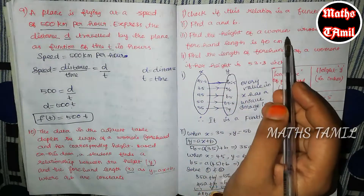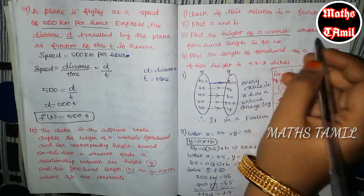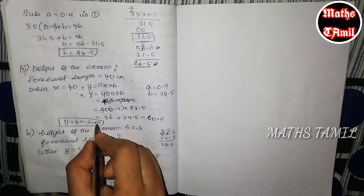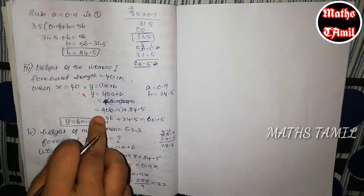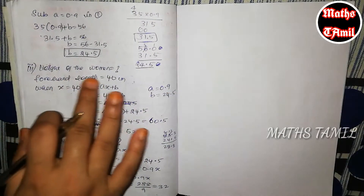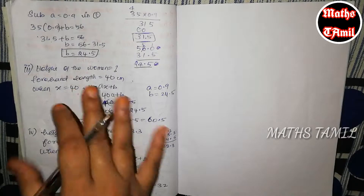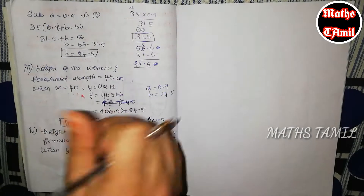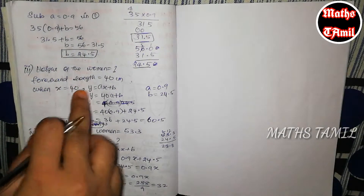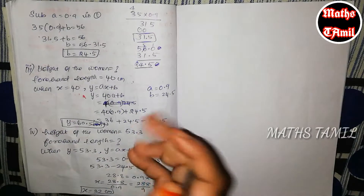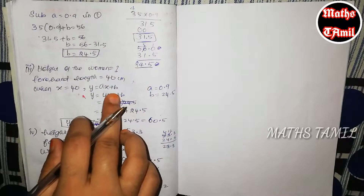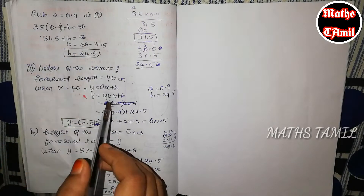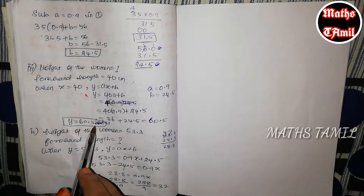Next, we find the height of the woman whose forehead length is 40 cm. Height is in inches. So, if forehead length x is equal to 40, we use the equation y equals ax plus b. Substituting the values of a and b, the answer is y equals 53.5 inches. The height of the woman is 53.5 inches.